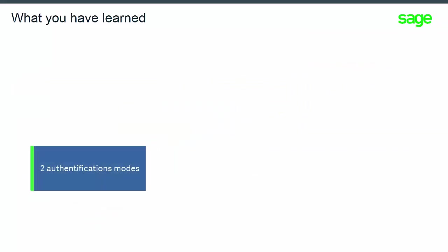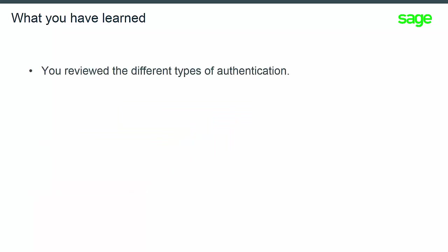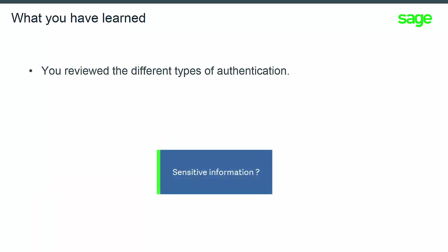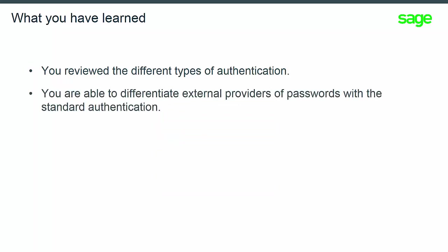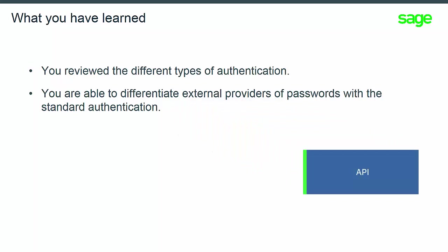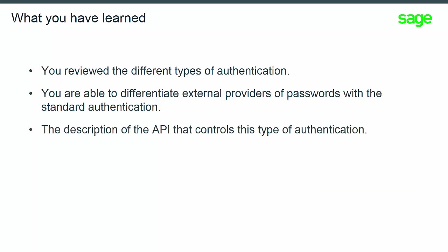Now you have learned that in Syracuse, we have two distinct types of authentication. You have external providers such as OAuth2, SageID, and SAML2. And on the other hand, we have standard authentication and LDAP. For sensitive information, we now have a means to control access by using a password other than the code provided by the external provider. Standard or LDAP users do not need to re-authenticate. A new API is used to control access to these sensitive areas.